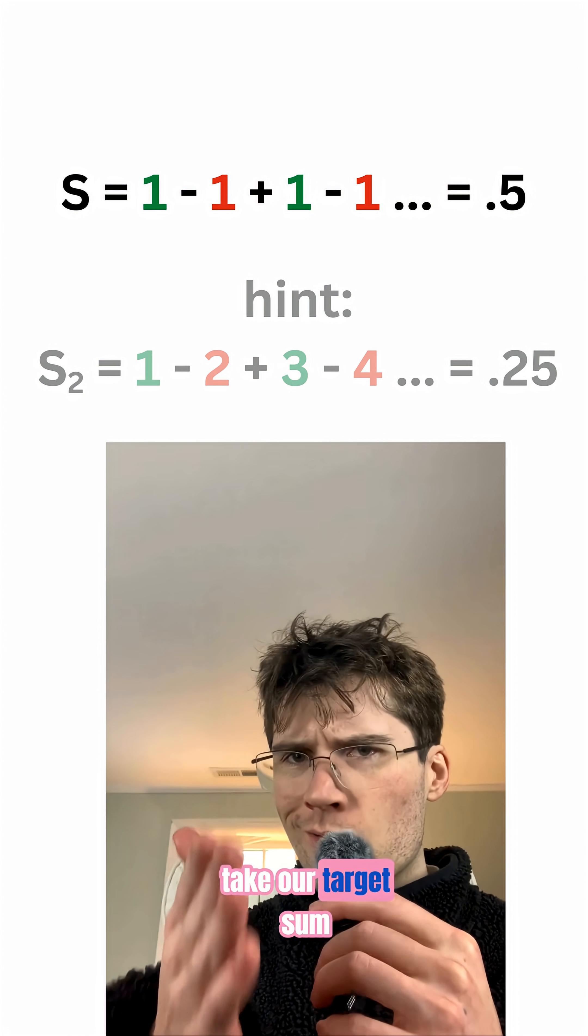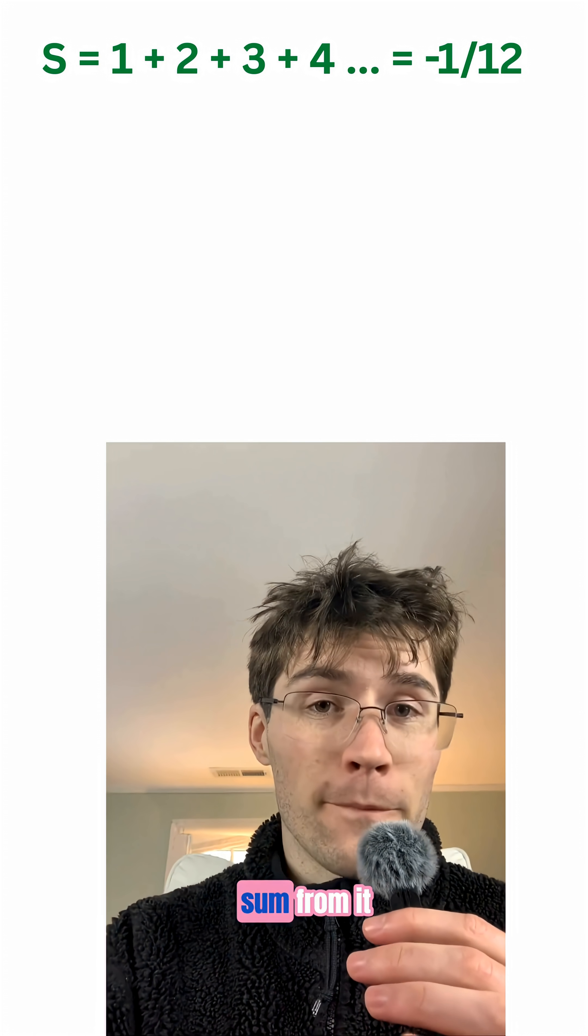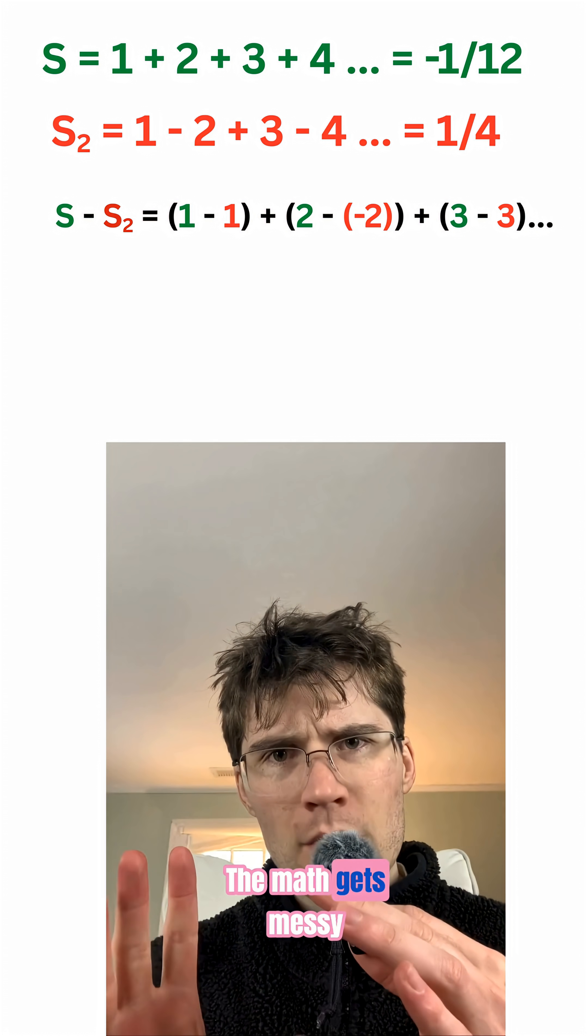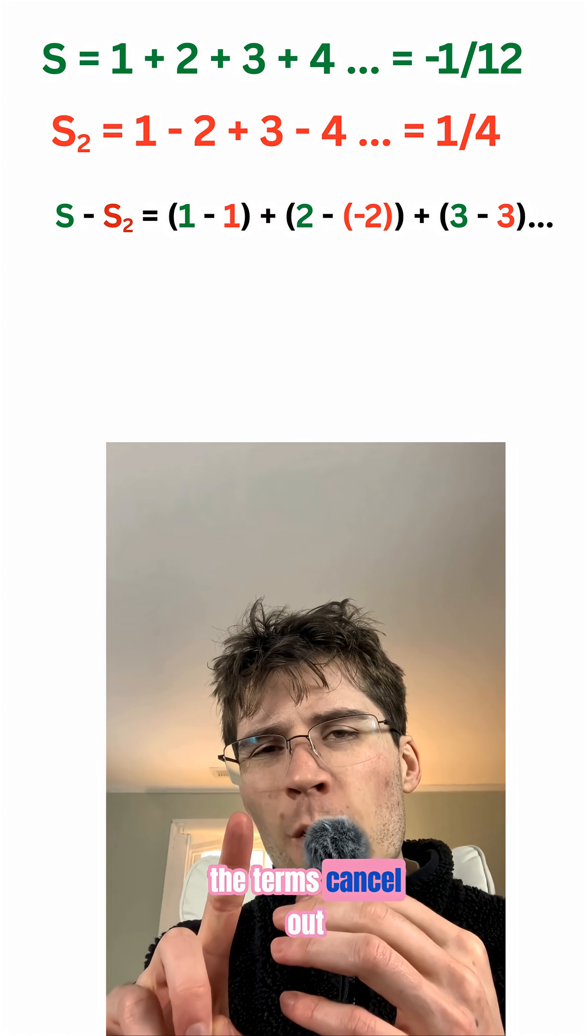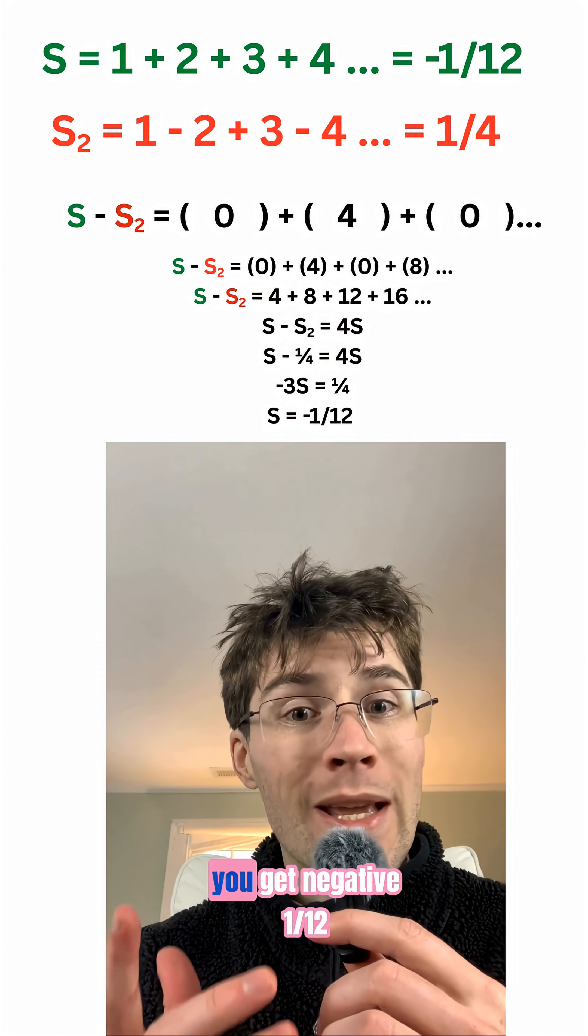Now, take our target sum. S equals 1 plus 2 plus 3 plus 4. We subtract a second sum from it. 1 minus 2 plus 3 minus 4. The math gets messy. But because of that 0.5 average, the terms cancel out in a specific pattern. When the dust settles, you don't get infinity. You get negative 1/12.